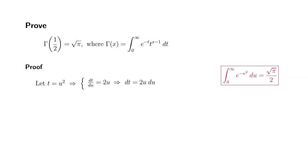So dt can be written as 2u times du, and also we have to work on the limits. You have t goes from 0 to infinity, and as you can see, u is going to go from 0 to infinity as well.